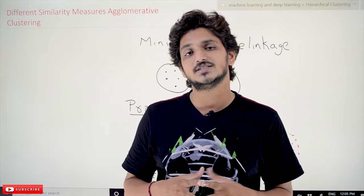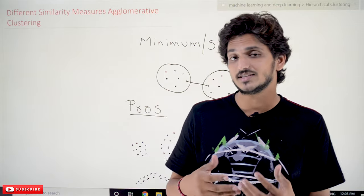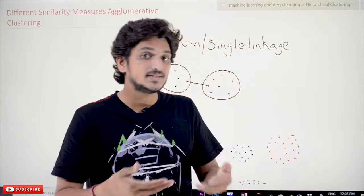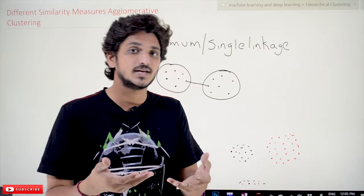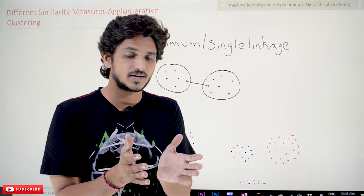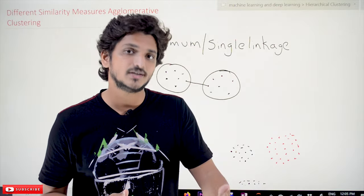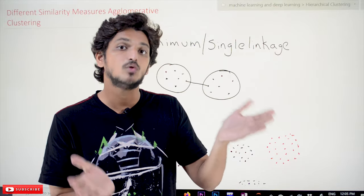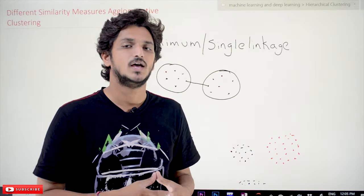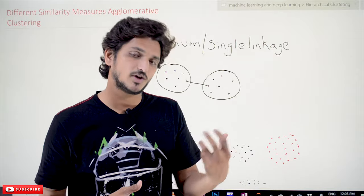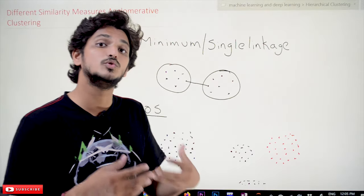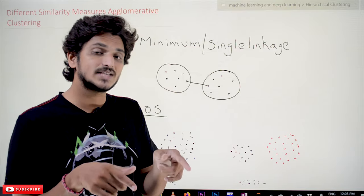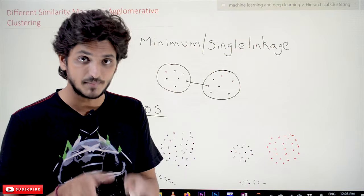Coming to today's class — the similarity measures. When we are discussing about agglomerative clustering we have to update the distance matrix. Based on the assumption you already know what the distance matrix is and how to calculate and update it. When we discussed the example in our last class, we discussed that we use different similarity measures. In our example we chose the maximum method.